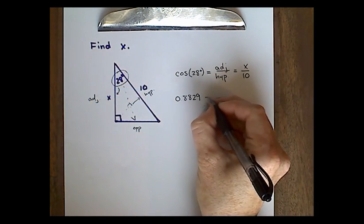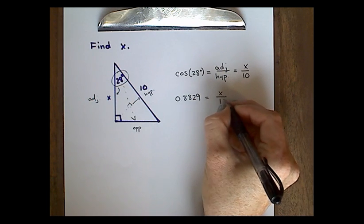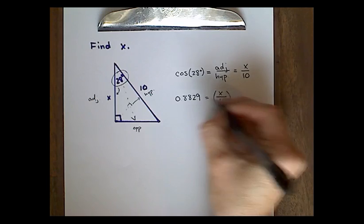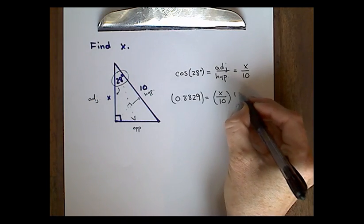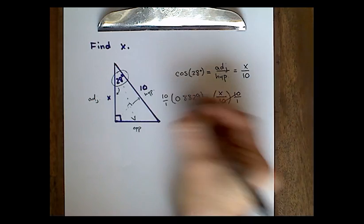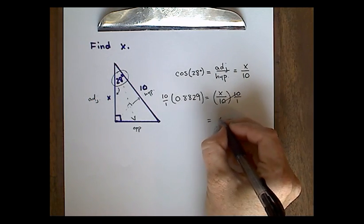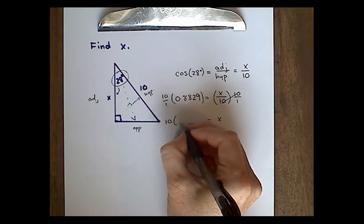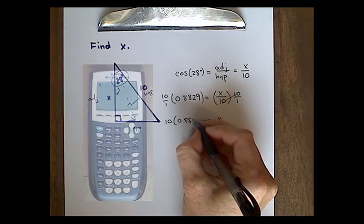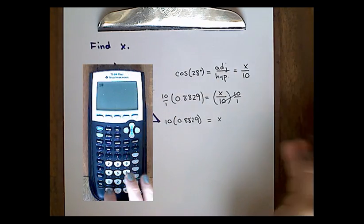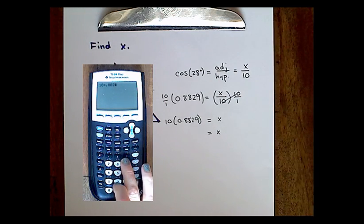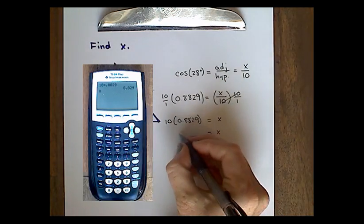We're going to round this to four decimal places and replace cos 28 with that value. Then we solve for x by multiplying both sides by 10. Using the calculator, 10 times 0.8829 equals 8.829.